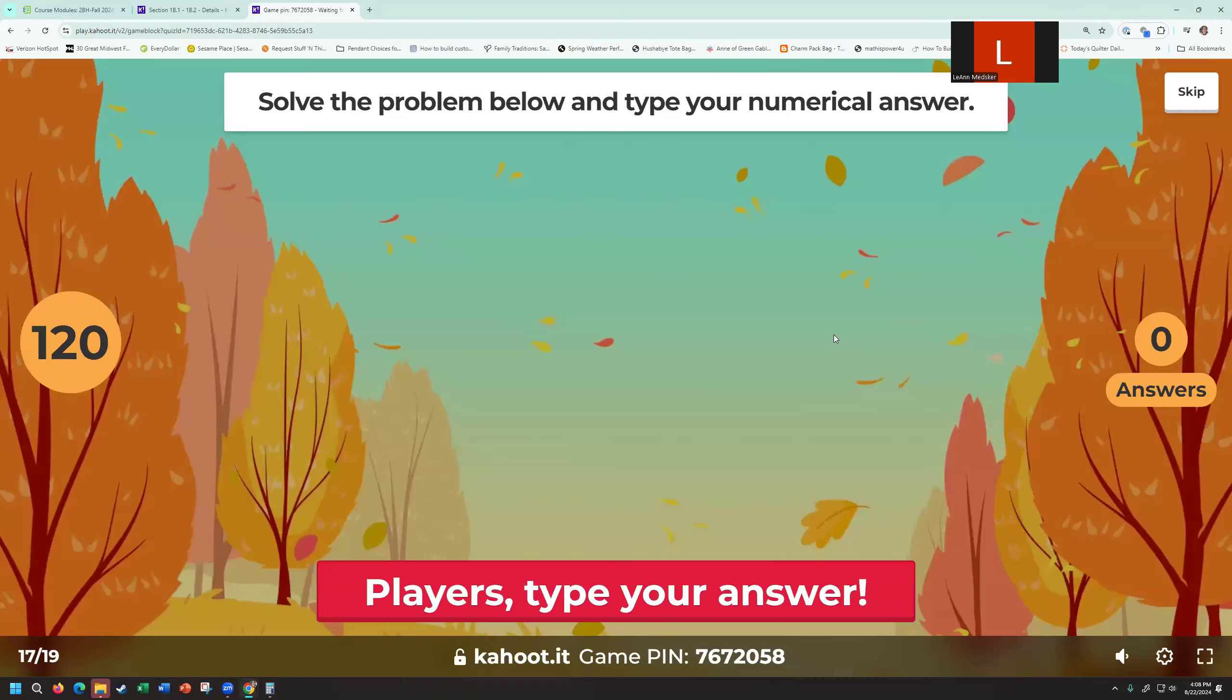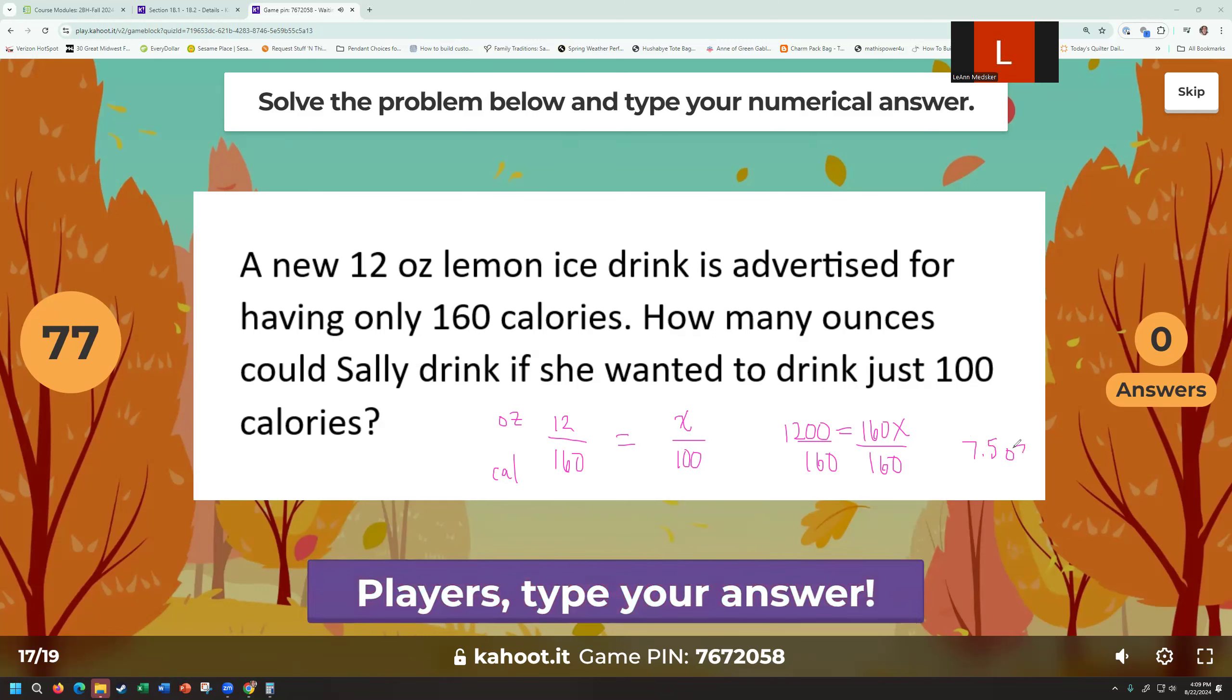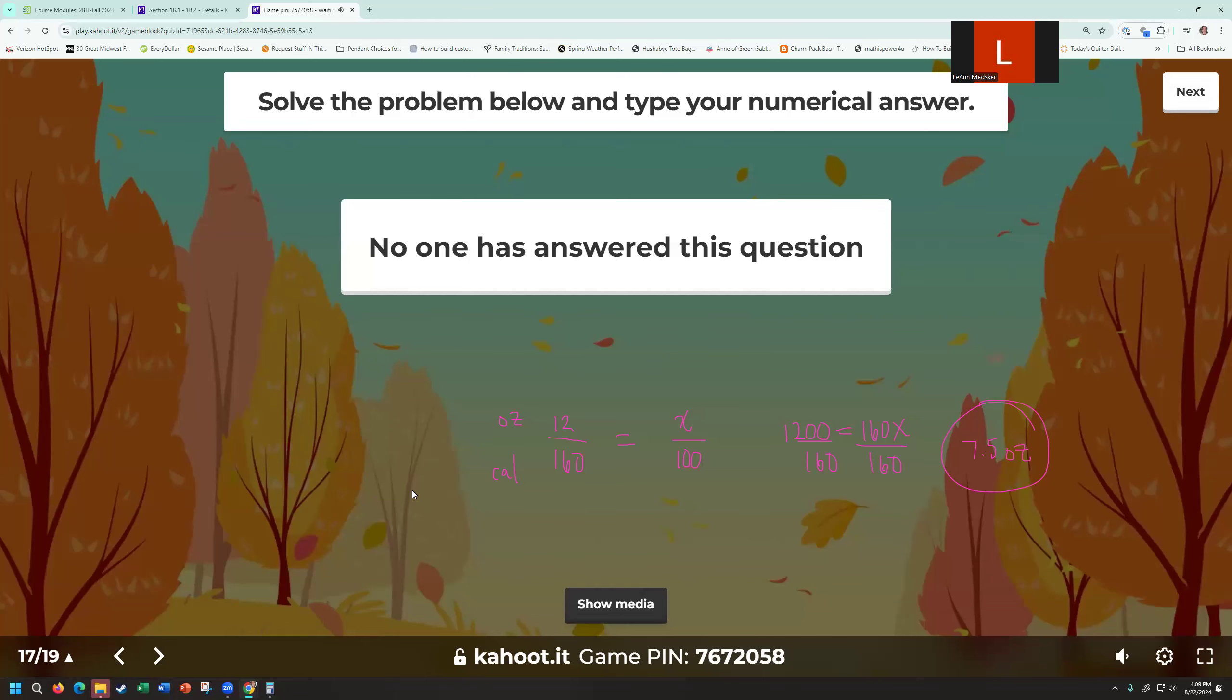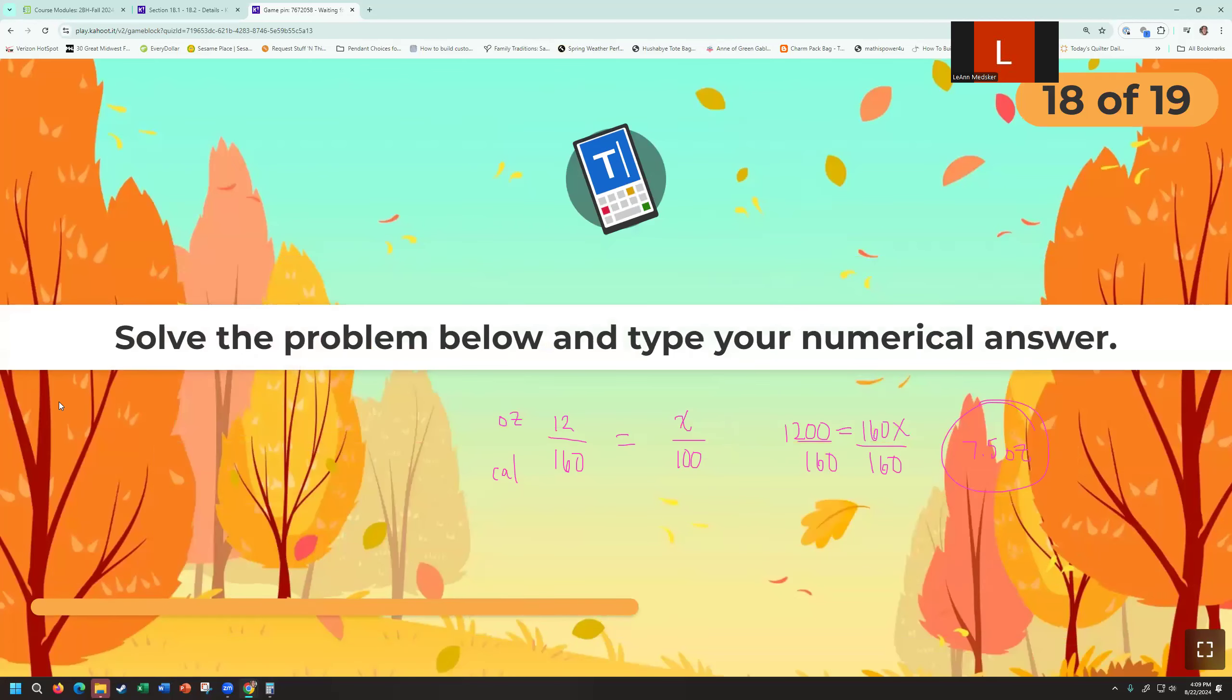Okay, so let's move on to our example to do together. And it just said type in a numerical answer. Normally, like I said, Newton does not have you put in units for some of these. So 12-ounce lemon ice drink is advertised for having only 160 calories. That's just like the one we just did. So if we think ounces over calories, how many ounces could Sally drink if she wanted to drink only 100 calories of that drink? So we do 12 times 100, which is 1200, equals 160X, divide by the 160. We'll want to get our calculator out, which I'm not going to do that because it'll clear off the screen real quick. But 1200 divided by 160 is 7.5. So 7.5 ounces of that drink. And again, you would have only typed in the 7.5 because that's kind of how they have you do it on the homework. But I did have the option for it to count that right as well, if you had typed in the words. I know no one answered the question. All right. I answered the question. But it was 7.5.